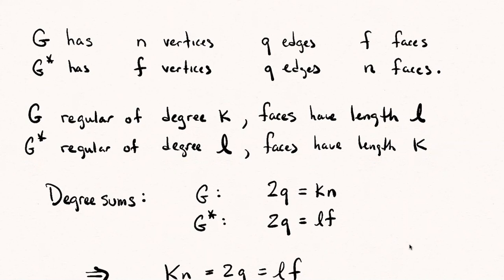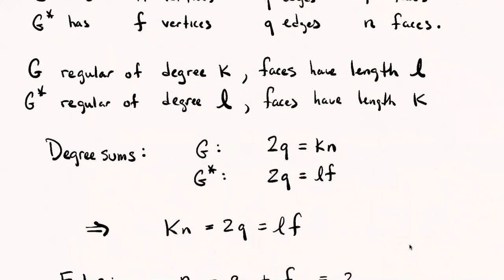Let's look at some degree sums. One of our first theorems in the class is the sum of the degrees is twice the size. So 2 times q, but in a regular graph where every vertex has degree K and it has order n, the degree sum is certainly going to be K times n. So in G, your degree sum formula tells you that Kn = 2q. In G*, it tells you that Lf = 2q because every vertex in G* has degree L and there are f vertices in the dual. That means that these three numbers, K times n, 2 times q, L times f, they're all equal to each other. That's a pretty big restriction on these numbers.